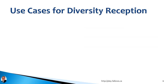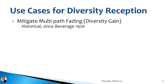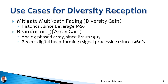What are the three use cases for modern diversity reception? The traditional use case is mitigating multipath fading — historically what diversity reception was invented for by Henry Beveridge in 1926. The diversity gain helps you overcome and mitigate the multipath fading of signals, and that can work in HF, VHF, microwave, and even up at light frequencies. Secondly is beamforming or array gain — since 1905, radio experimenters have used phased array antennas starting analog, well over a century ago.